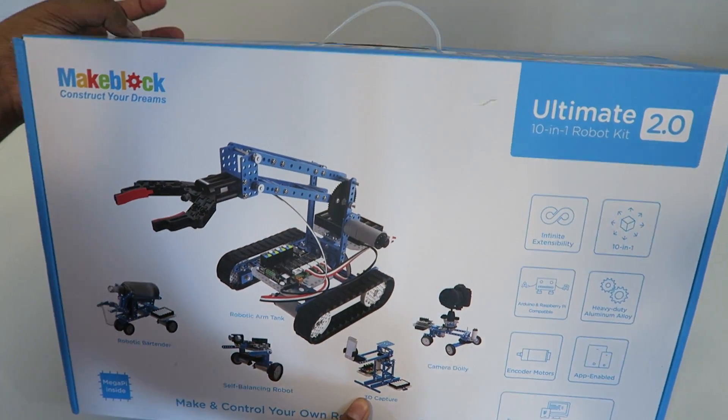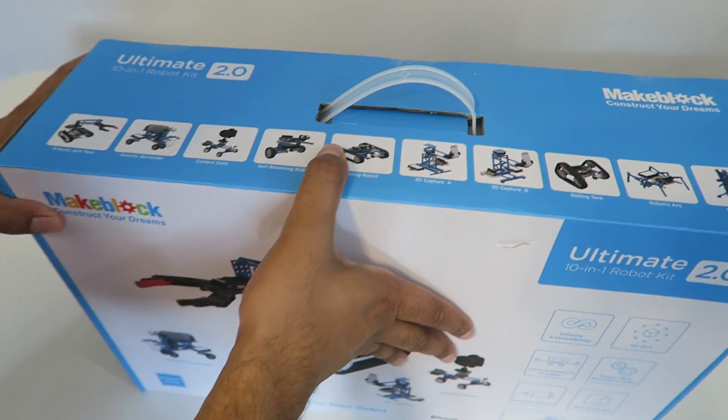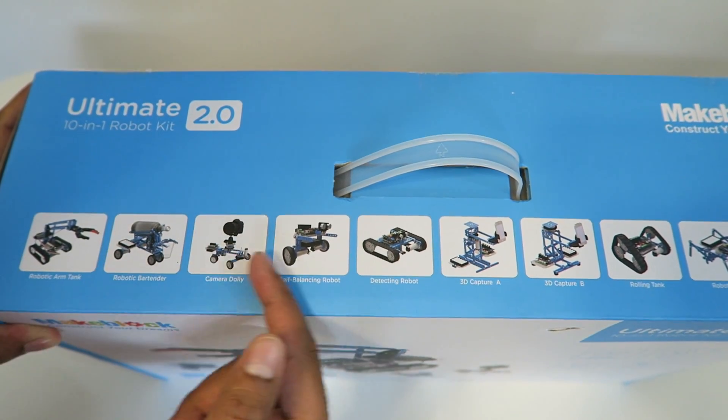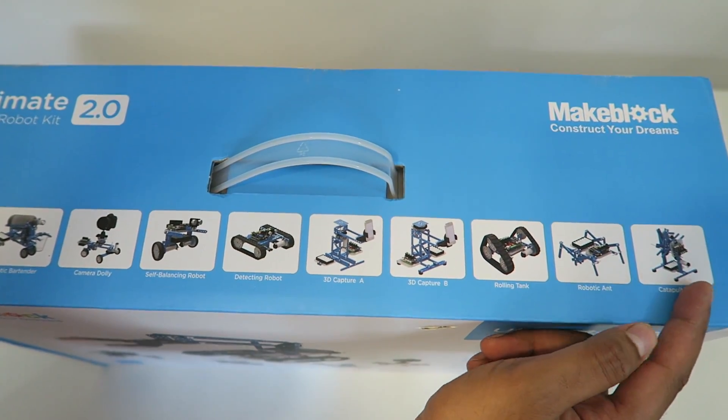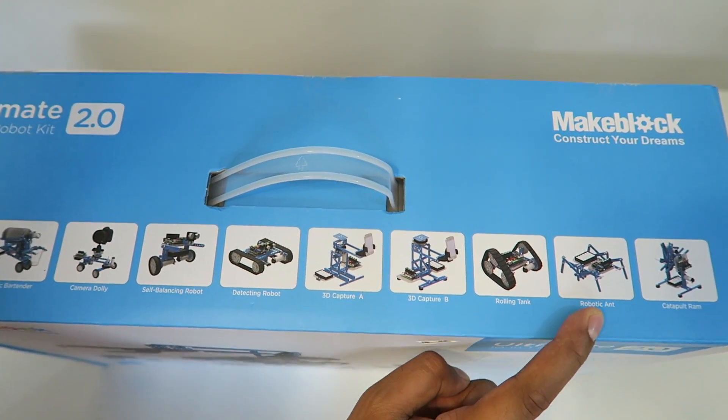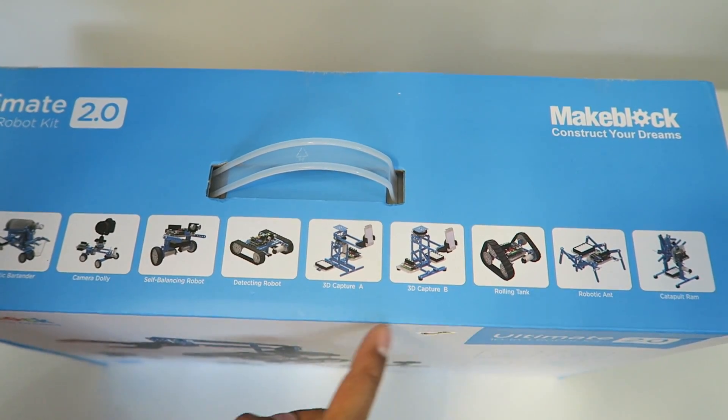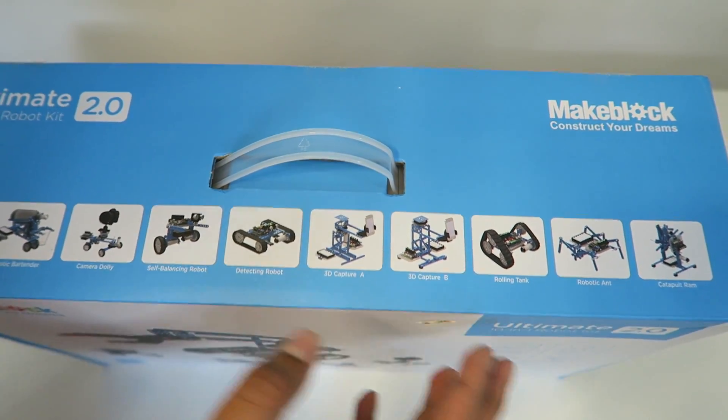Now it is Bluetooth, so you don't have to worry much about the terms of wireless and how that all works out. Over here kind of shows all the other different robots you can make, including a rolling tank, a robotic ant, a catapult, a detecting robot, as well as much, much more.